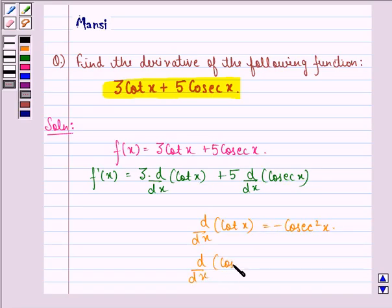And d/dx of cosecant x is equal to minus cosecant x cot x. So we put these two values here and we get